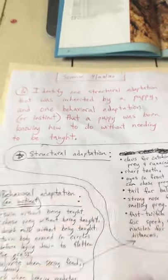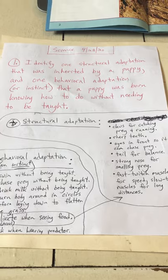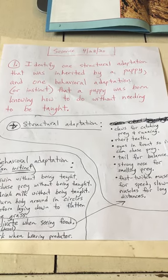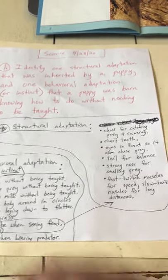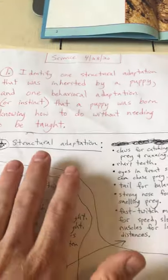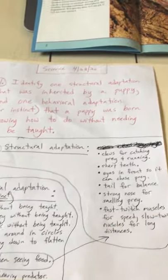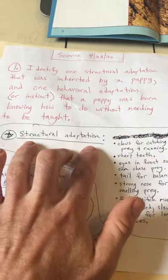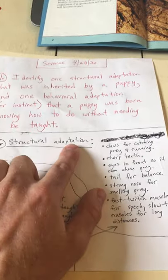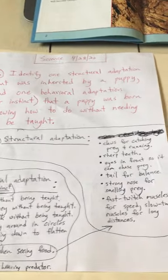We went over some examples yesterday and we're going to go over more right now. The question from yesterday said: identify one structural adaptation that was inherited by a puppy, and one behavioral adaptation or instinct that a puppy was born knowing how to do without needing to be taught. I made a list — these are not the only correct answers, so please send your answer to your teachers so they can check if yours was also correct.